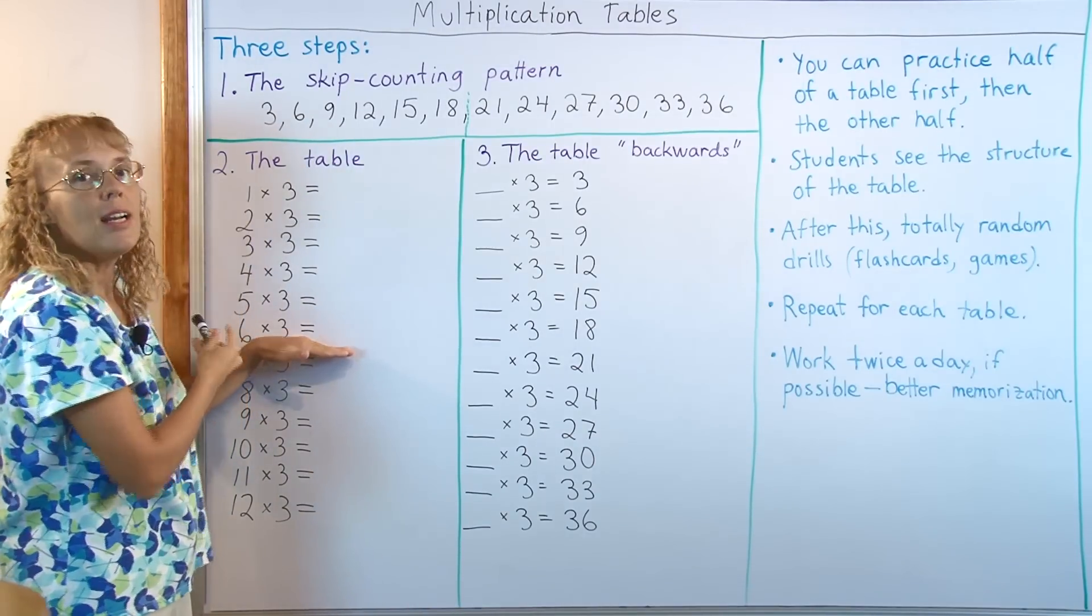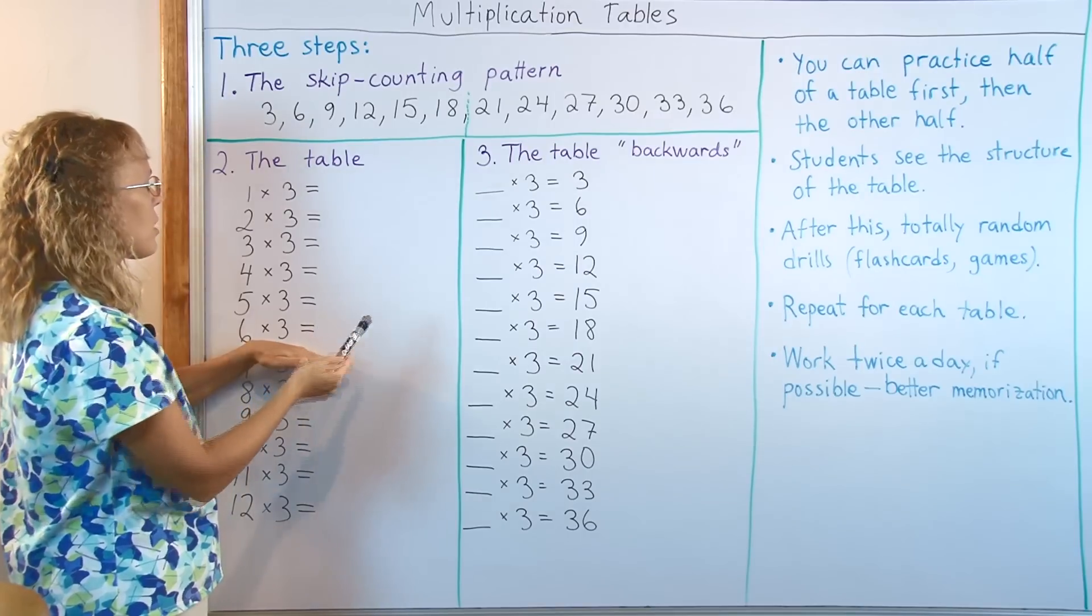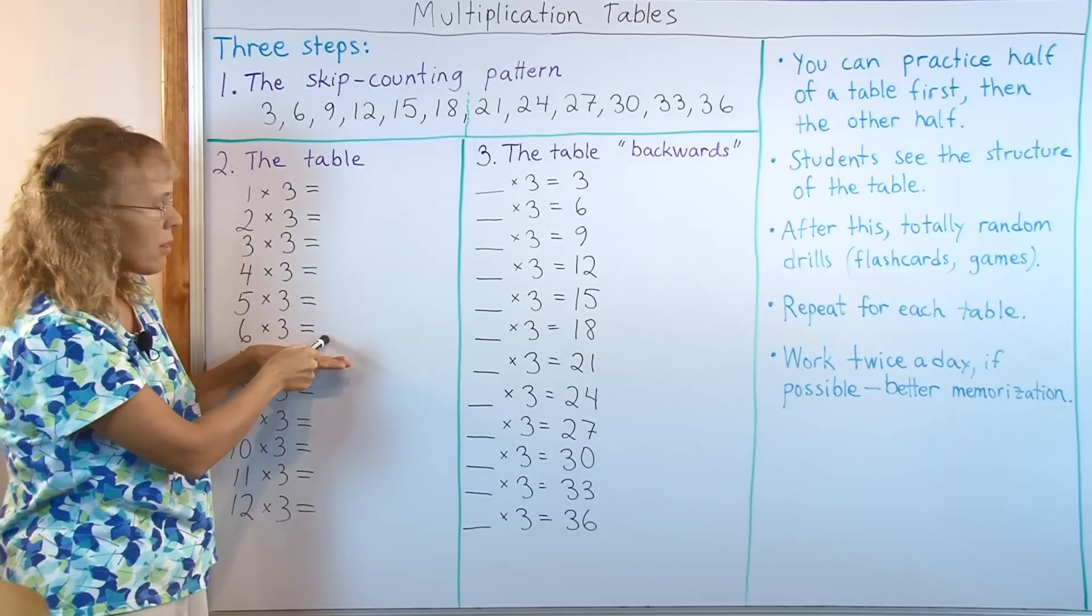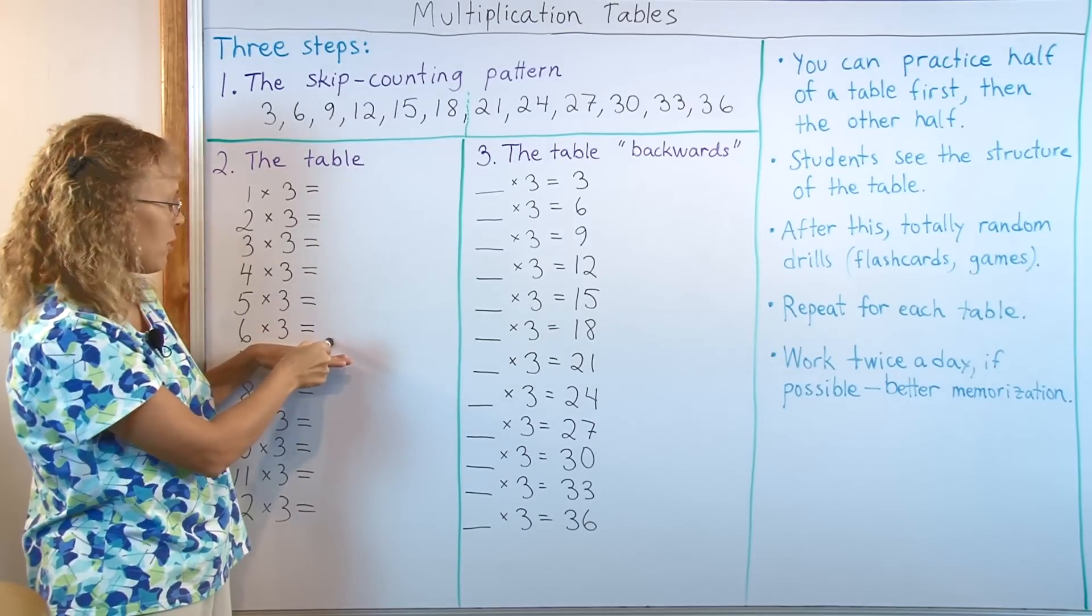So that is a random drill but they can see the structure of the table there and they can notice that if 2 times 3 is 6 and then the teacher points to 6 times 3 next, that must be much more than that, right? Because it's further down.